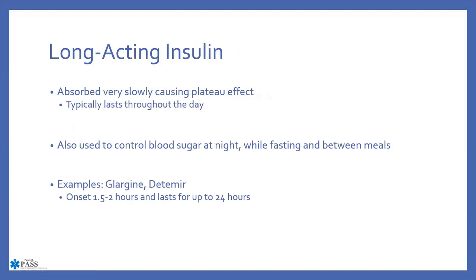Long-acting insulin is absorbed very slowly, creating a plateauing effect that lasts throughout the day. Examples include Glargine and Detemir. Onset is about 1.5-2 hours, but some last up to 24 hours. This plateauing effect is preferred for well-controlled diabetics because it avoids the peaks and valleys in blood sugar — they get a more steady, consistent level rather than the ups and downs.